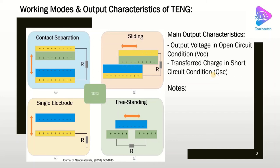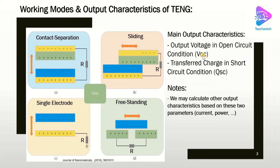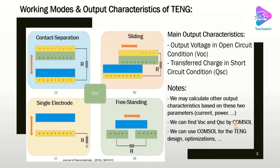There are some notes we need to know about the TNG. If we know the VOC and QSC, we may be able to calculate other outputs of the system such as current, power, and output voltage. Importantly, we can estimate the open circuit and short circuit by COMSOL simulation. Based on COMSOL simulation, we can design, optimize, and find the performance of TNG systems. That's why it is very important to know how to model the TNG in COMSOL and how to extract VOC and QSC.